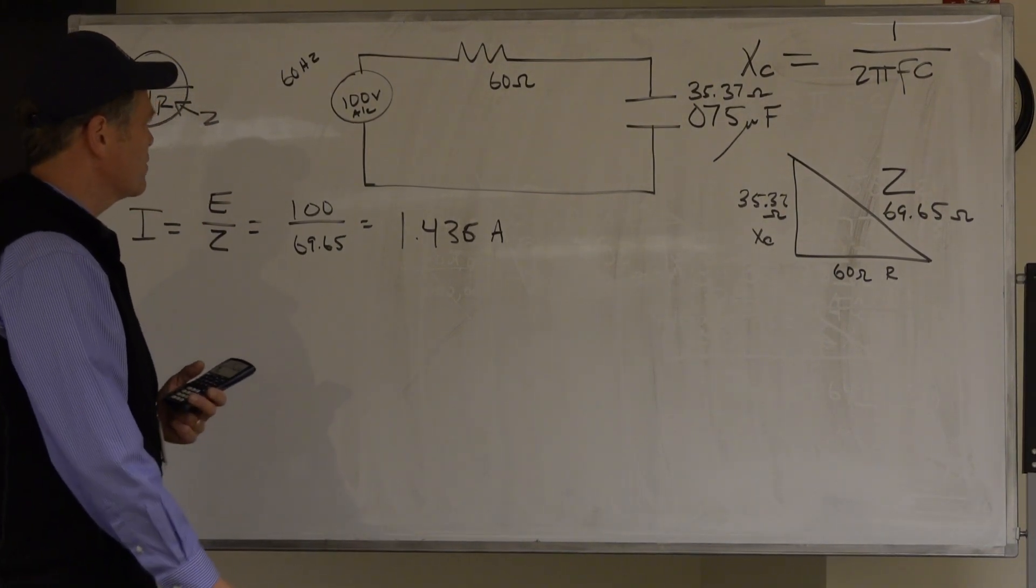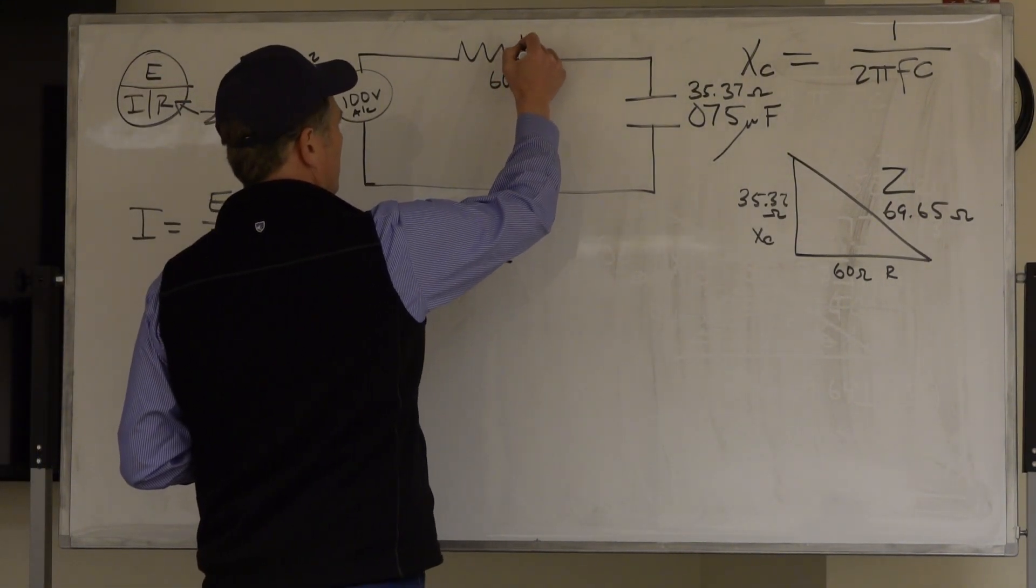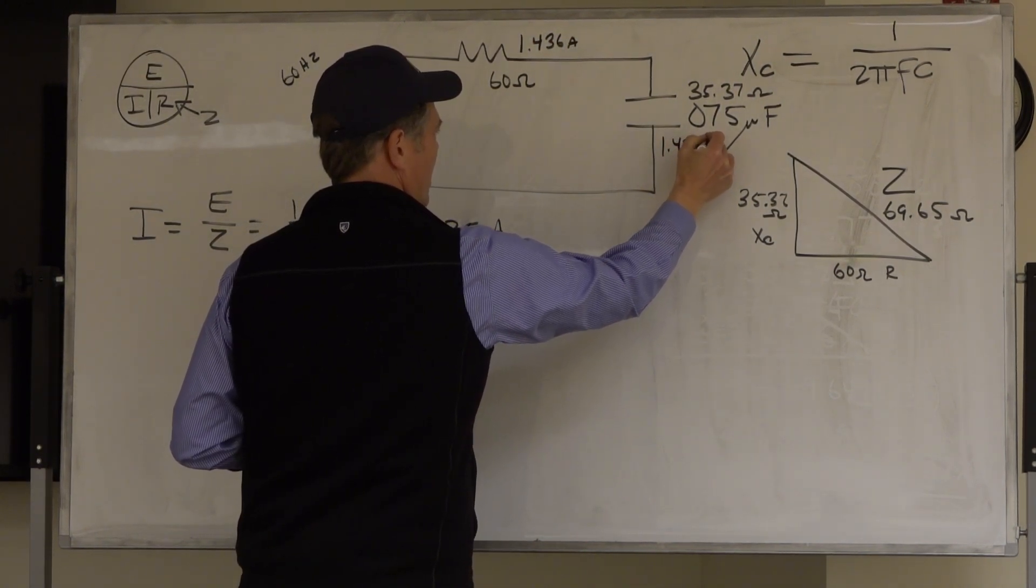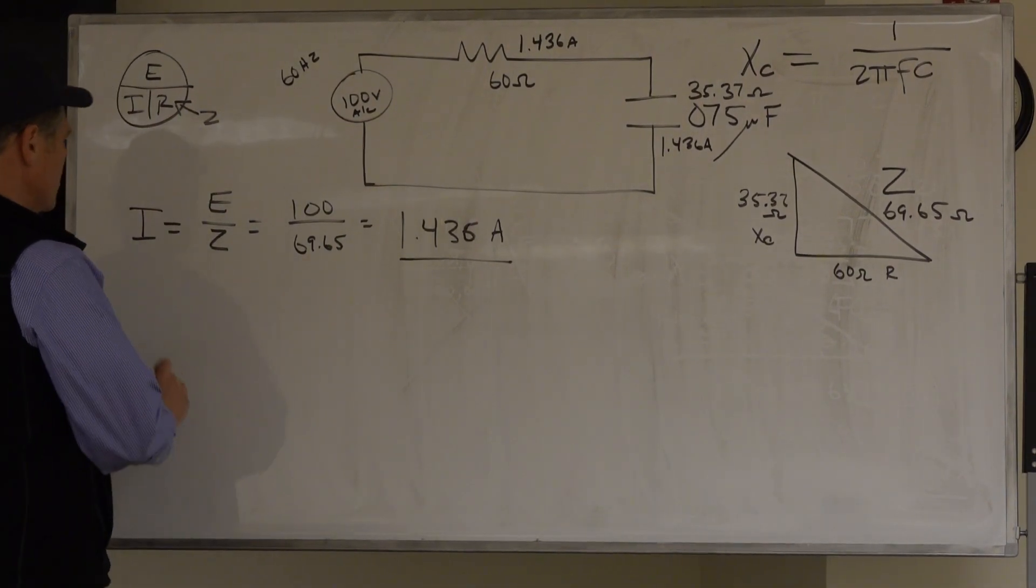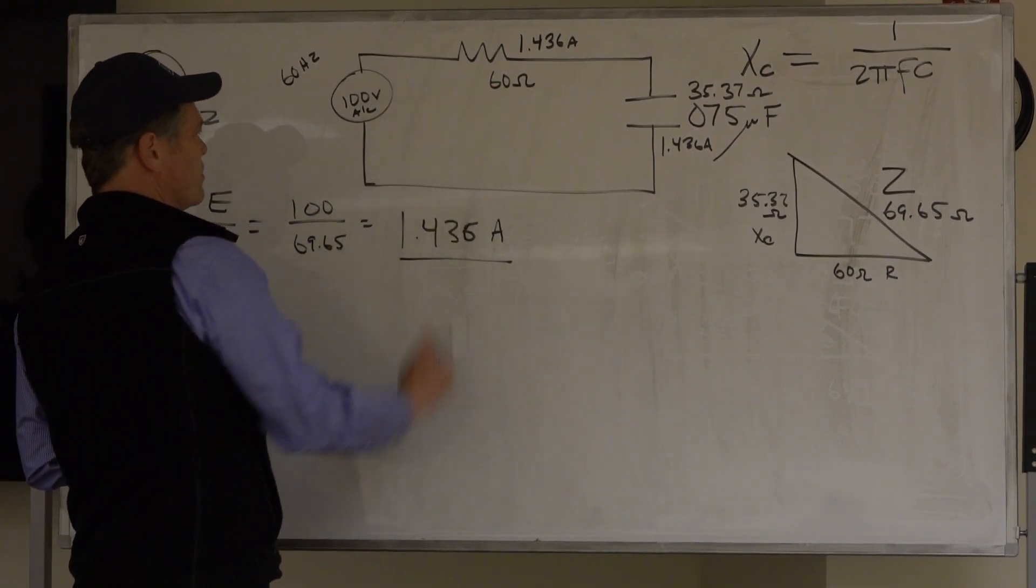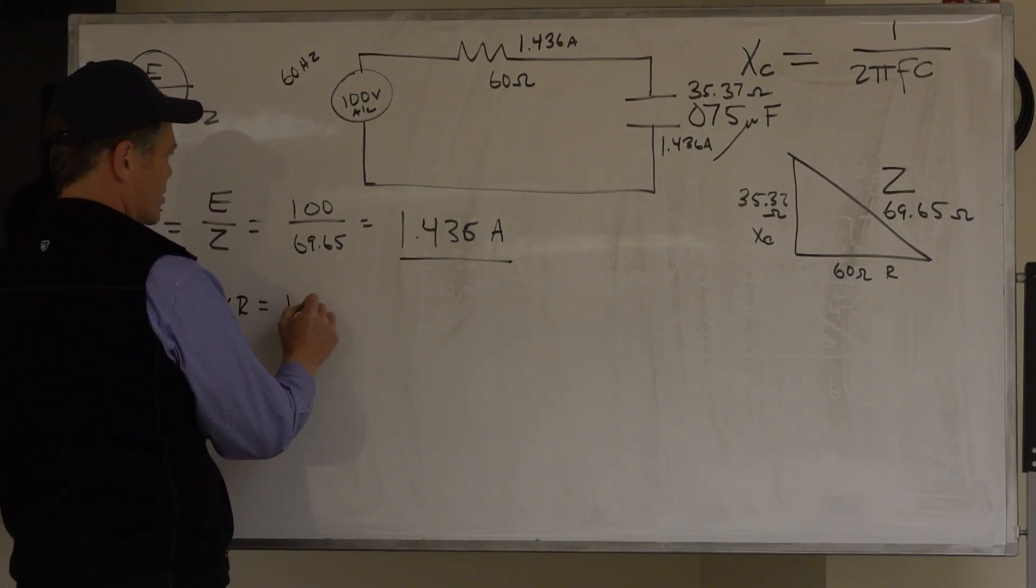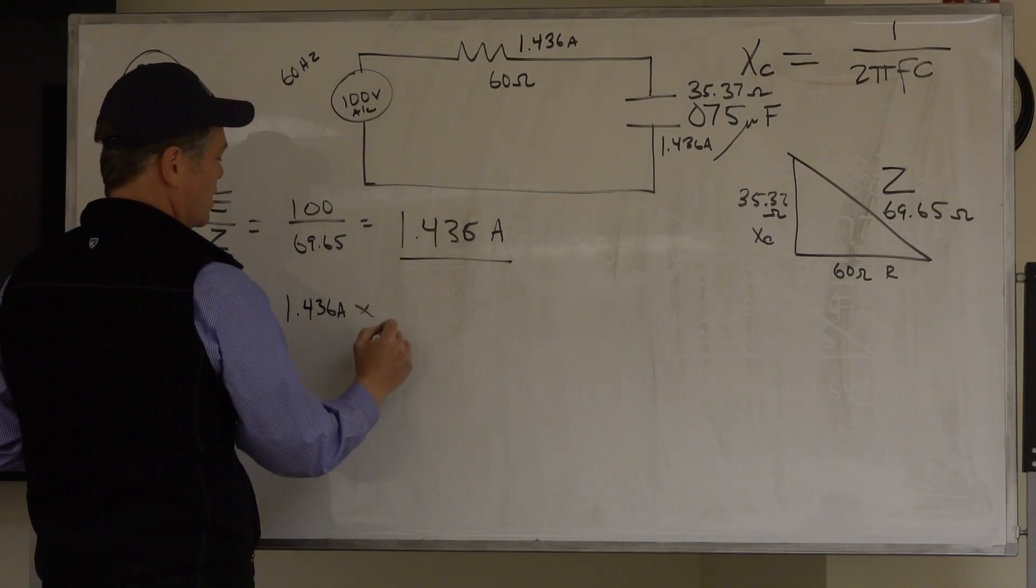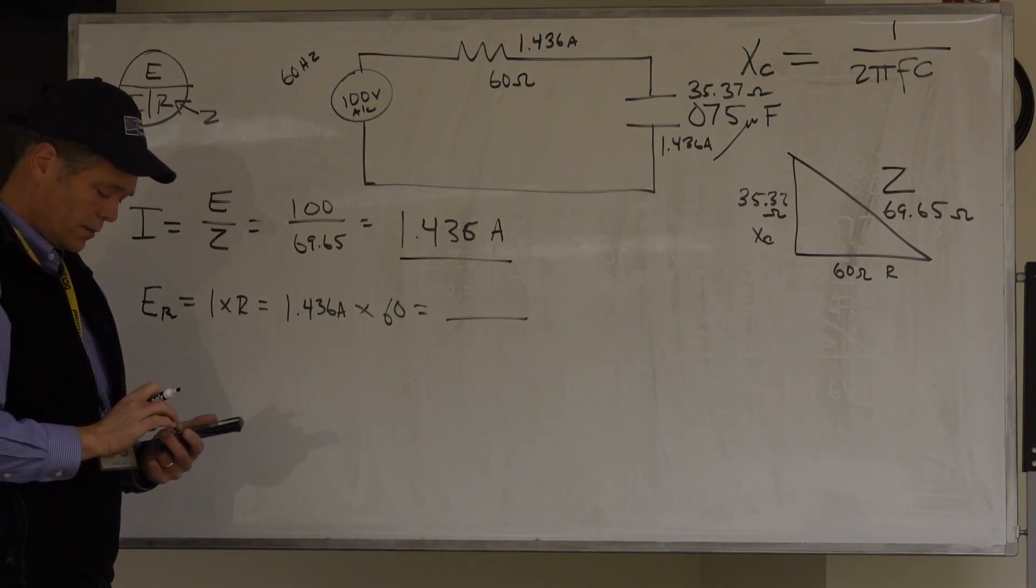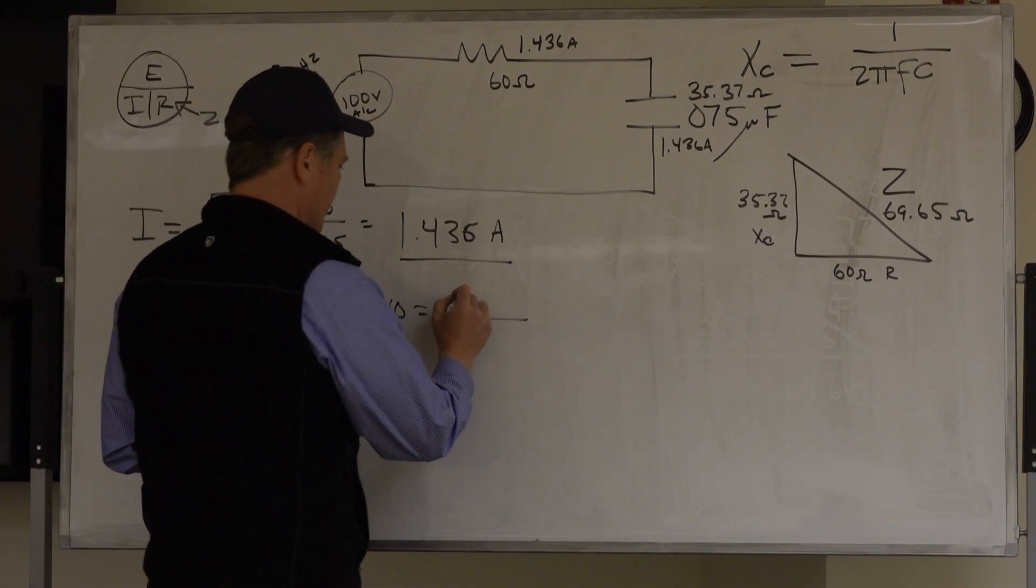So I'm going to use that number just for fun. And I'm going to take that current, because again, series circuit, current's the same everywhere. And I'm going to install it right up here. I'm going to put it in my 1.436 amps, and 1.436 amps. And both of those, and I'm going to use those to solve my voltages. So my E at the resistor is my voltage at the resistor. Here's my resistor. E's formula is I times R. In this case, I'm going to take my I, which I know, 1.436 amps, times, given, 60 ohms, and that's going to give me my voltage there. 1.436, whoops, 1.436 times 60, and that equals 86.16.